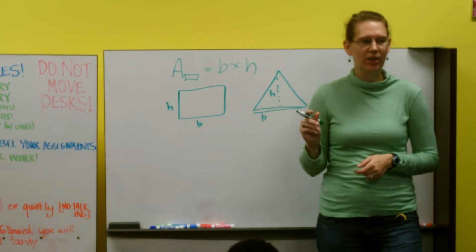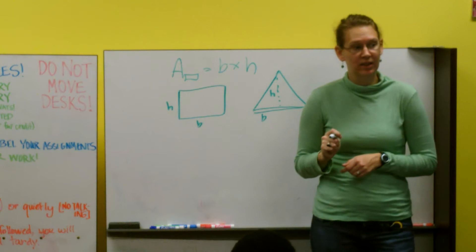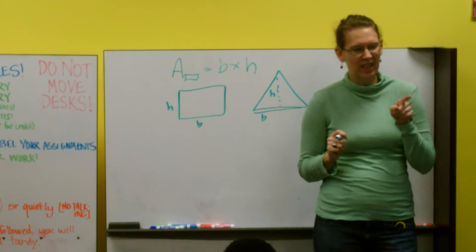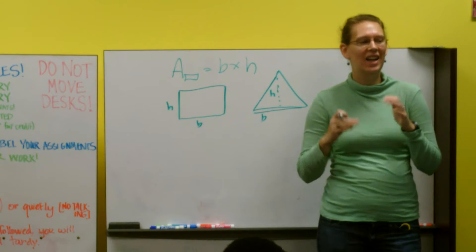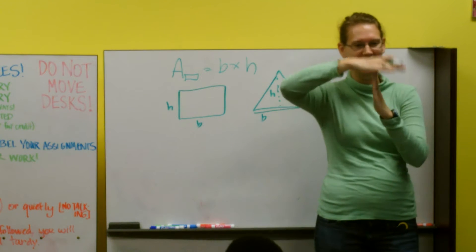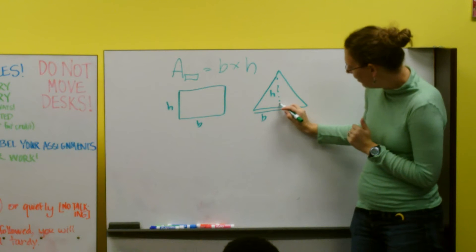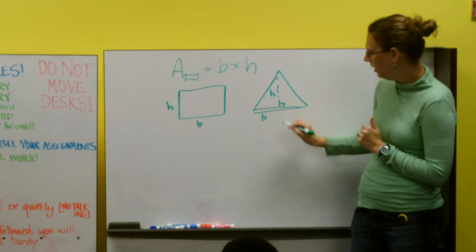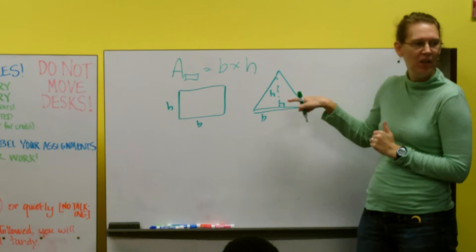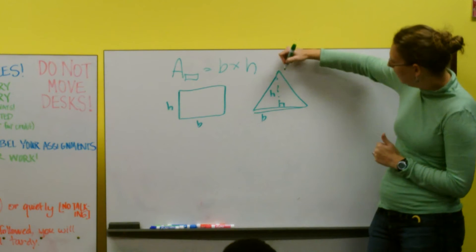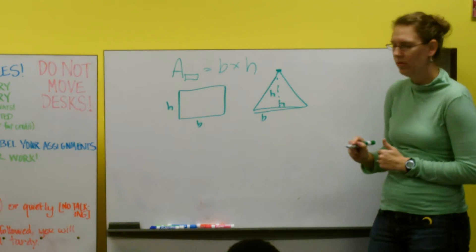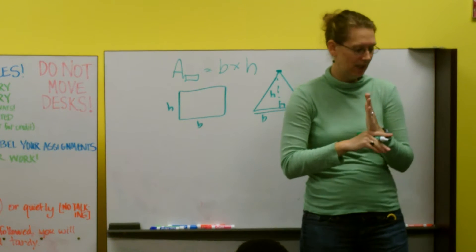And the way that we can think about that is going to be your perpendicular distance from the base. Anyone want to tell me what perpendicular means? Anyone know that word? Perpendicular means it makes a right angle with the base. Your height is going to be from the tallest place in the triangle down to the base. And it has to be perpendicular.